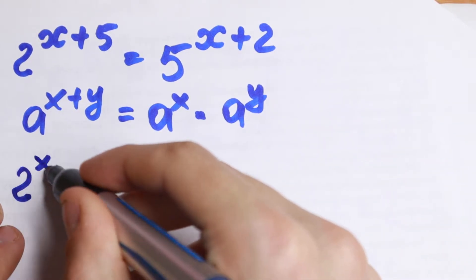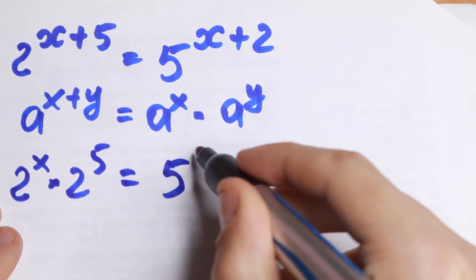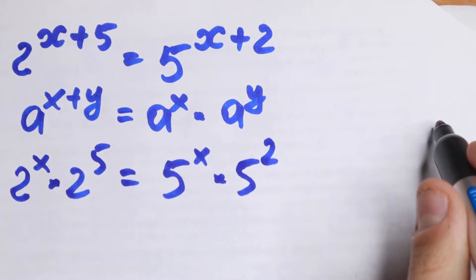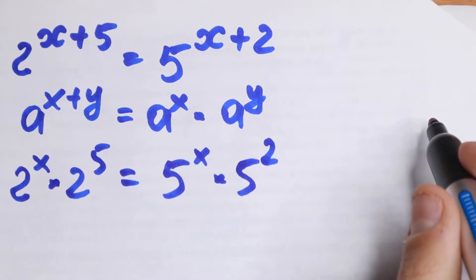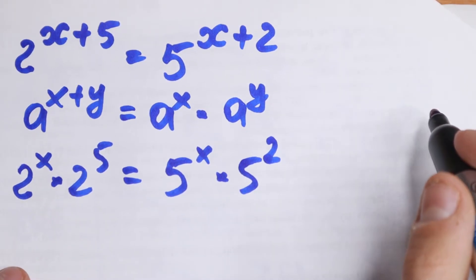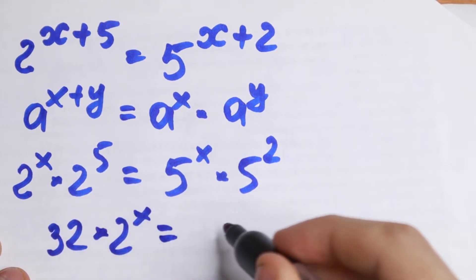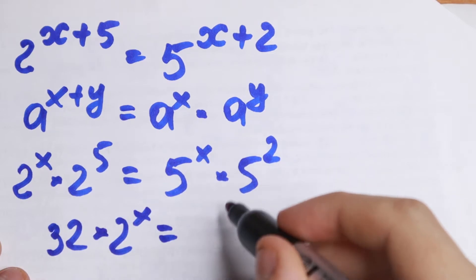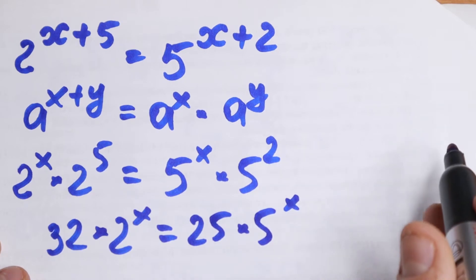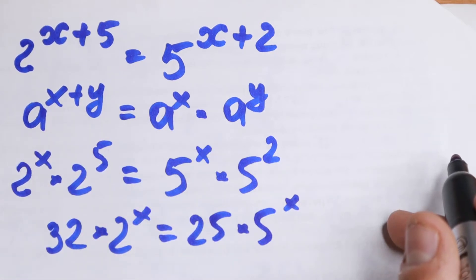Applying the rule, we get 2 to the power x times 2 to the fifth power, equal to 5 to the power x times 5 squared. Now, 2 to the fifth power equals 32, so we write this as 32 times 2 to the power x, equal to 25 times 5 to the power x. Just two steps: apply the rule, then evaluate the powers.